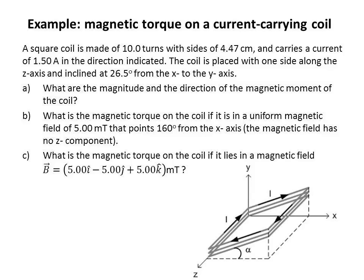What are the magnitude and direction of the magnetic moment of the coil? What is the magnetic torque on the coil if it is in a uniform magnetic field of 5 milliteslas that points 160 degrees away from the x-axis, with no z-component? And what is the magnetic torque on the coil if it lies in a magnetic field of 5i-hat minus 5j-hat plus 5k-hat millitesla?